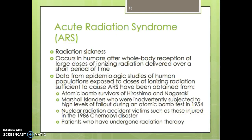Acute radiation syndrome, or ARS, also called radiation sickness, occurs in humans after whole-body reception of large doses of ionizing radiation delivered over a short period of time. You can receive the same amount of radiation, but if it's spread over a long period of time, your body has time to heal. A large dose delivered all at once or over a short period doesn't allow healing, making it far more severe. Data from epidemiologic studies come from atomic bomb survivors of Hiroshima and Nagasaki, Marshall Islands residents inadvertently exposed to fallout during atomic bomb testing in 1954, nuclear accident victims such as those from the 1986 Chernobyl disaster, and patients who have undergone radiation therapy.